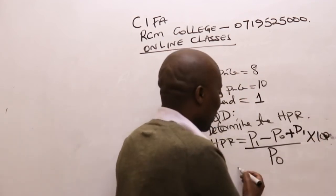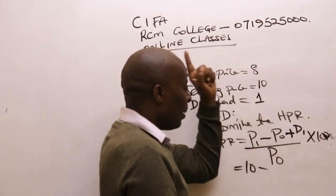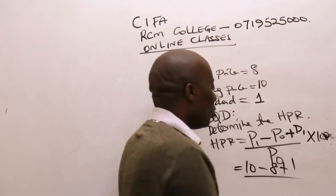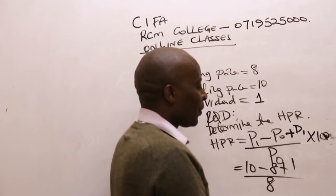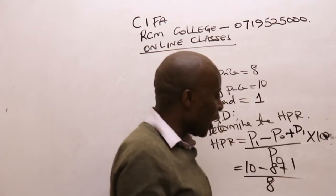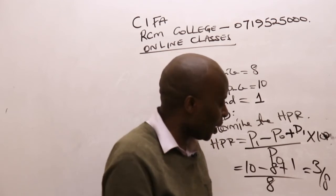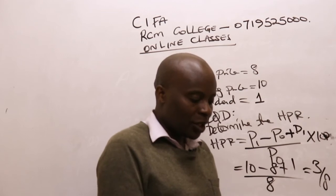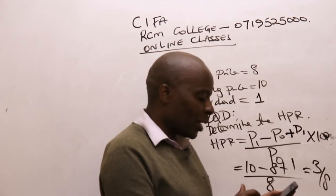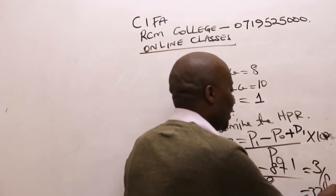So, ladies and gentlemen: the price of this share at the end of year one is 10, minus the price at the beginning, which is eight, plus the dividend received at the end of year one, which is one — all over our initial price of eight, times 100. So 10 minus eight gives us two. Two plus one gives us three. Three divided by eight — please get out your calculator and convert to percentage. Three divided by eight times 100 gives us 37.5%. That is the answer.